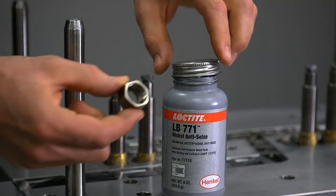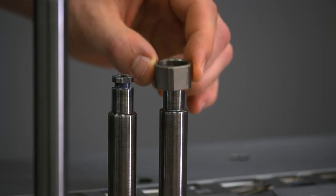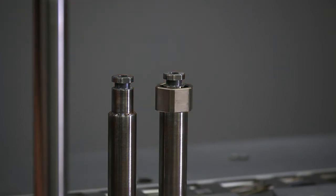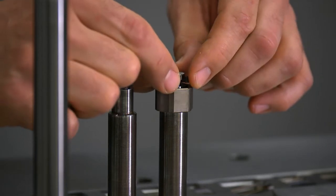Apply nickel anti-seize to the threads of the nut. Prior to installing the nozzle head on the housing, you will want to slide the retaining nut onto the housing as well as install the split ring.